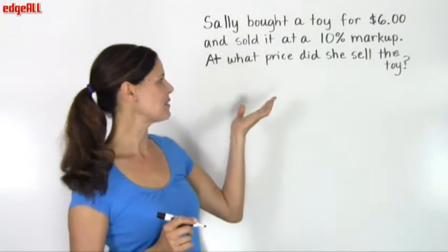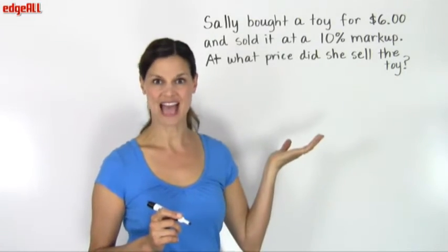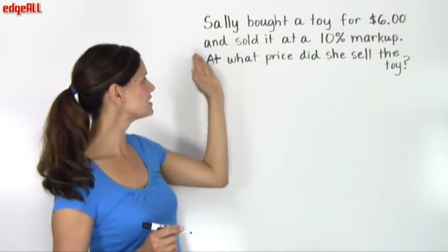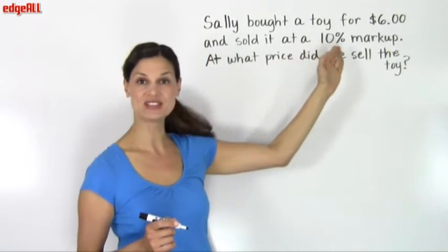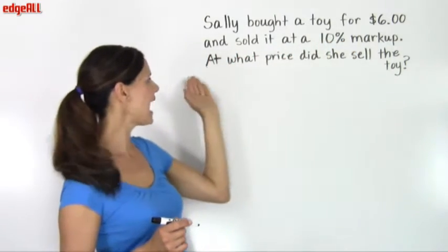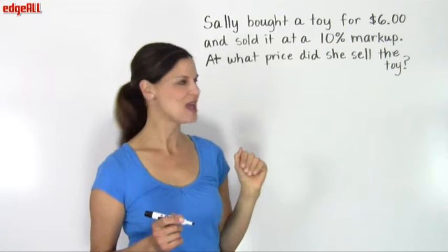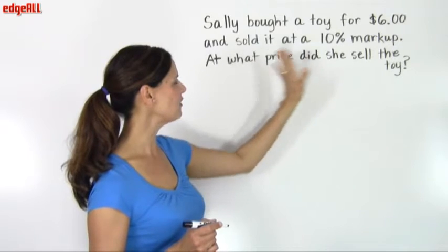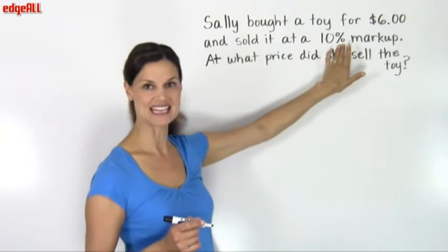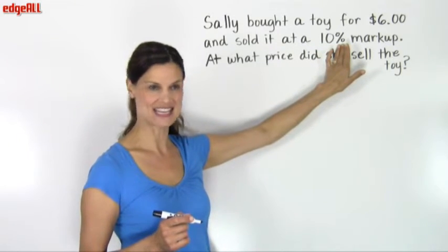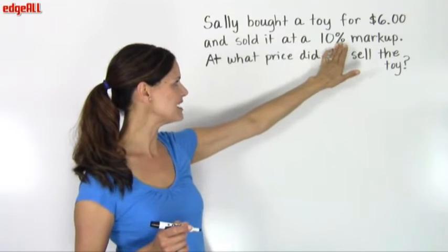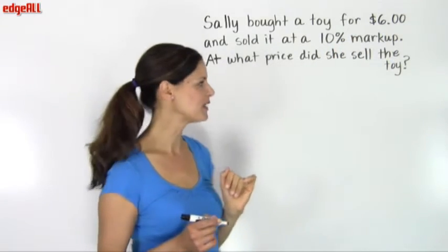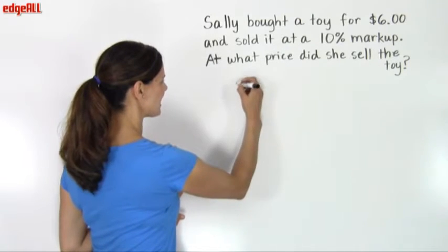Our first example has to do with markup. Sally bought a toy for $6 and sold it at a 10% markup. At what price did she sell the toy? The first thing that we want to find is we want to find out what 10% of the purchase price is, because the markup is 10% of the price that she bought the toy for.